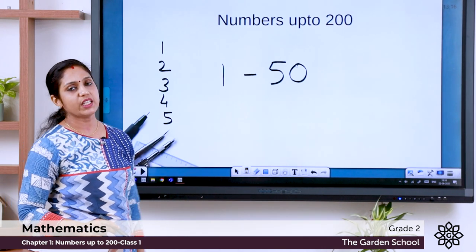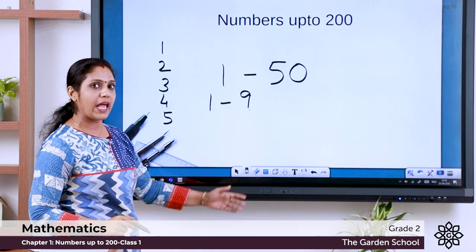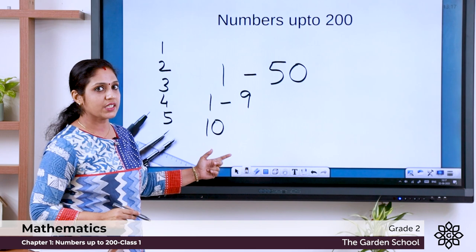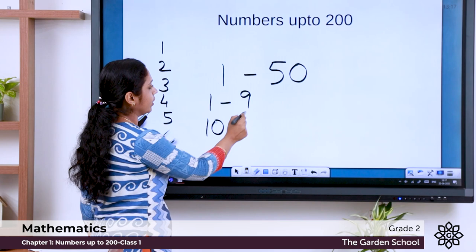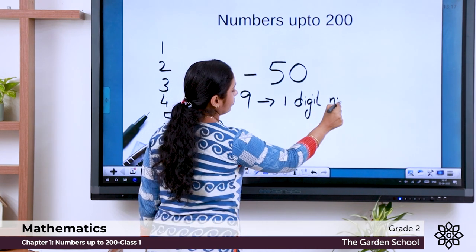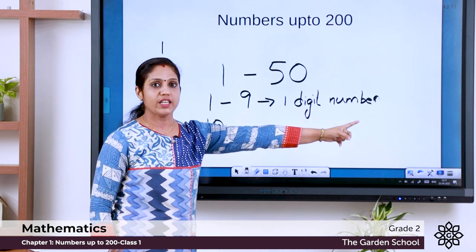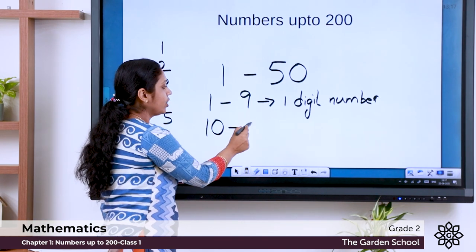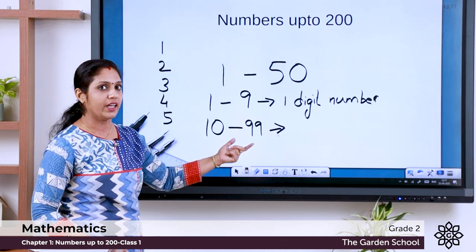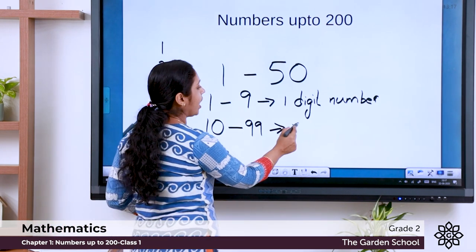Now let's find: is there any difference between these numbers? From 1 to 9, there is only one digit. After 9, what happens? The number is 10. How many digits are there in 10? There are two digits. So from 1 to 9, the numbers are one-digit numbers. From 10, the two digits start. From 10 to 99, there are two digits — they are the two-digit numbers.